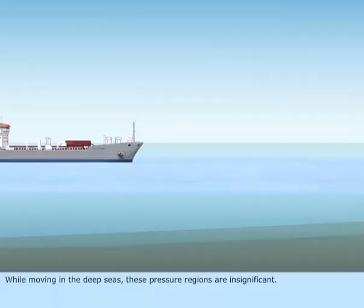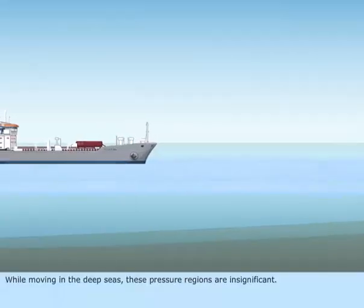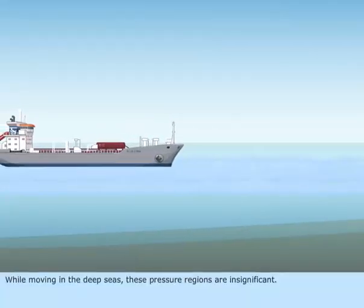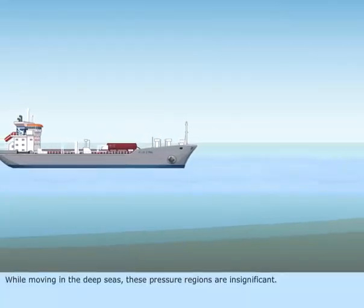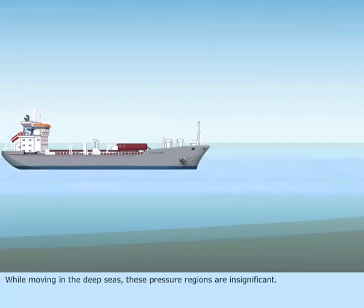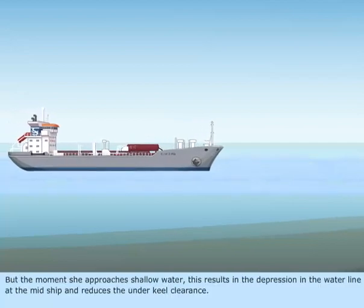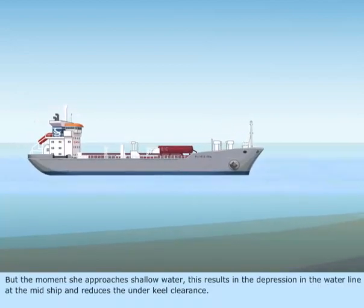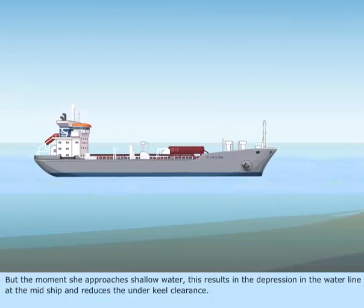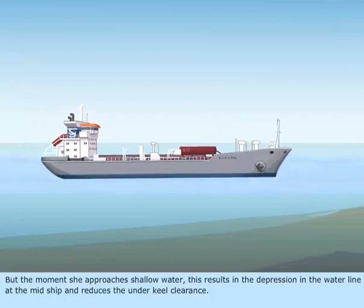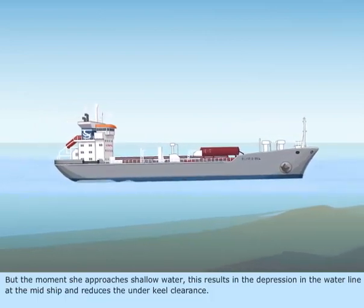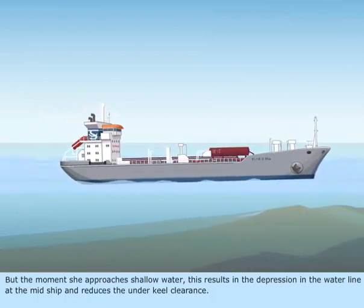While moving in deep seas, these pressure regions are insignificant. But the moment she approaches shallow water, this results in a depression in the water line at the midship and reduces the underkeel clearance.